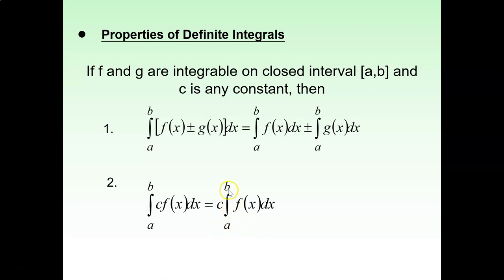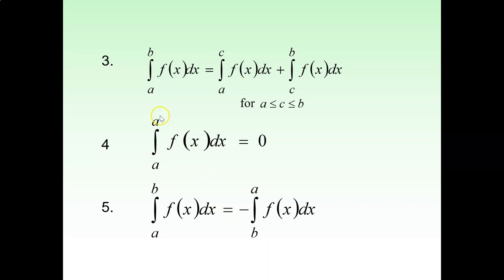a and b can be any numbers, as well as the constant c. It just makes the integration easier if you put the constant at the front. The third property is that the integration of f(x) from a to b is actually equal to the integration of f(x) from a to c, plus the integration of f(x) from c to b.